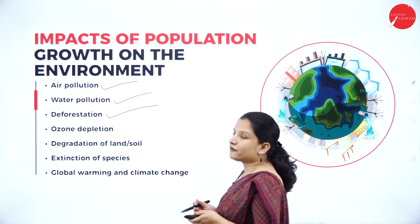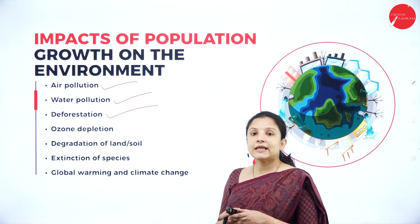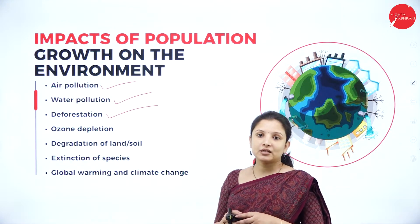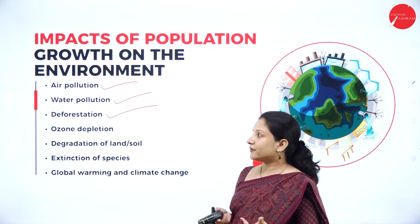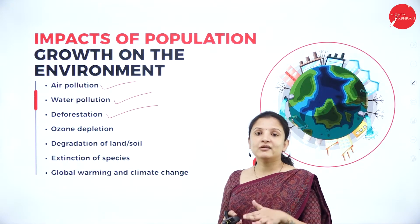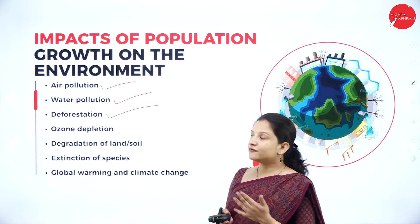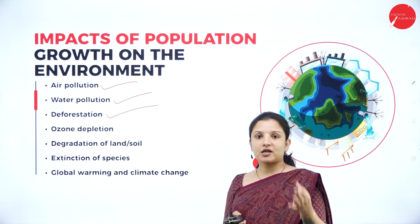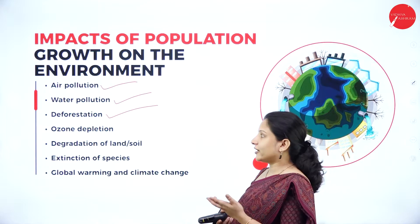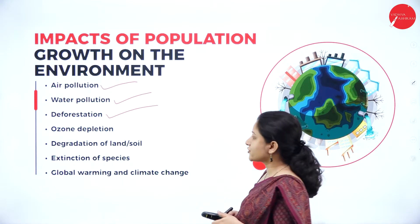Next, it will lead to deforestation. As the population in a country increases, there will be demand for space — more houses, infrastructure, and roads. People will start cutting down forests so that land can be used for agriculture, transportation, housing, schools, colleges, and industries. Therefore, deforestation is one of the major threats to the ecosystem because of population growth.